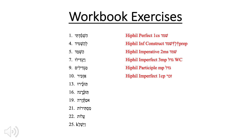What about number thirteen? Number thirteen is also a Hiphil imperfect, second masculine plural — identical to number ten in terms of the stem, where you have a preformative with a patah underneath because it's imperfect, and again the hirik yod in the middle. We have the shuruq at the end, which tells us that in combination with the tav preformative, this is a second masculine plural.